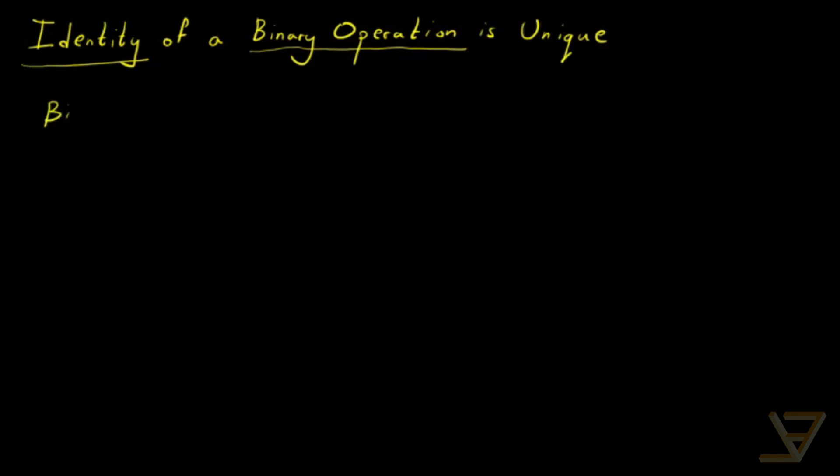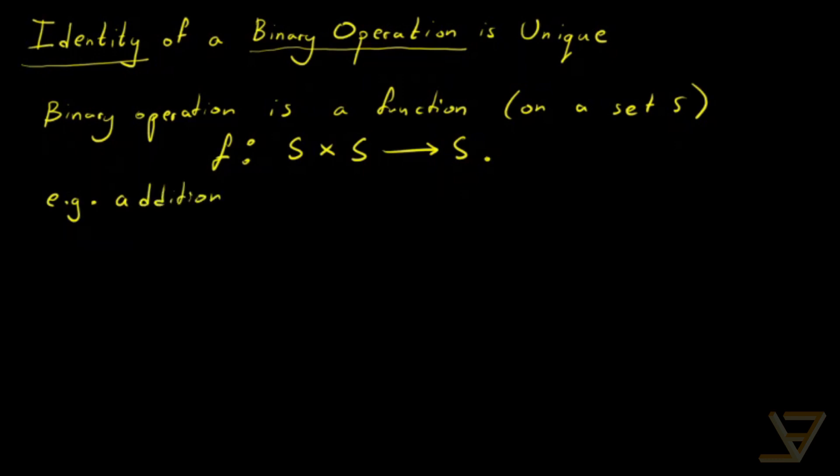First of all, a binary operation is a function on a set S that goes from S cross S, that's a Cartesian product, back into S. Now this might seem a little abstract or cryptic, but we see these all the time. For example, addition or multiplication on the real numbers are binary operations.